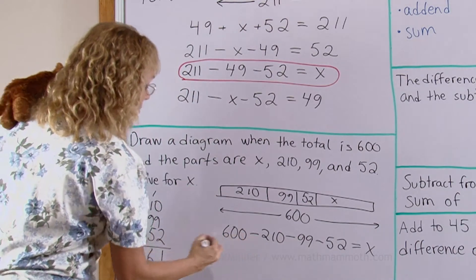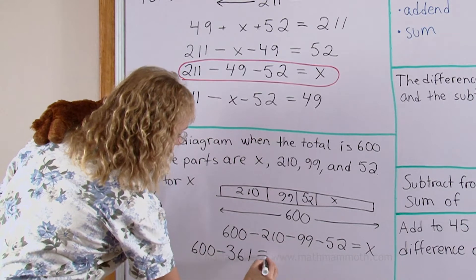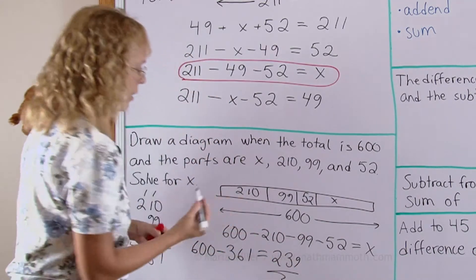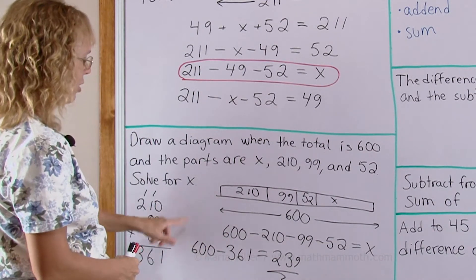So now I subtract 600 minus 361 which leaves me 239. That's easy enough to do mentally. It's the reason why I didn't write it down here under each other.